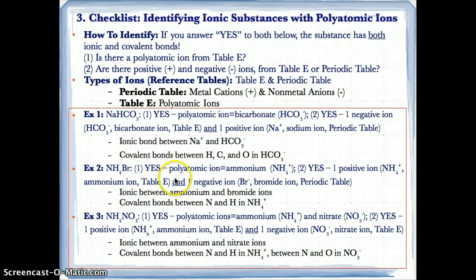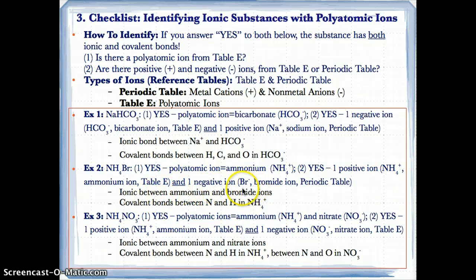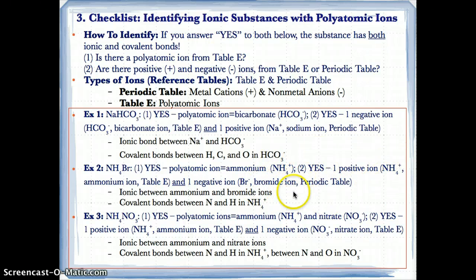For 2NH4Br: do we have a polyatomic ion? Yes — ammonium, NH4+, from Table E. Are there positive and negative ions? Yes: the positive ion is NH4+ (ammonium) from Table E, and the negative ion is Br− (bromide) from the periodic table, which carries a charge of −1 in ionic compounds. Both conditions are fulfilled, so we have ionic and covalent bonds. The ionic bond is between ammonium and bromide ions, and the covalent bonds are between N and H within NH4+.